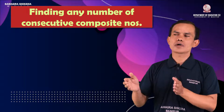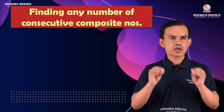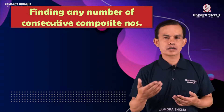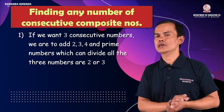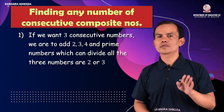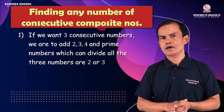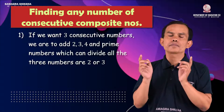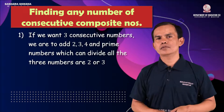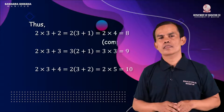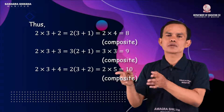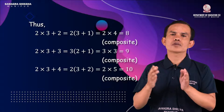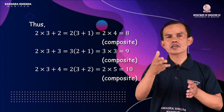Now, about consecutive composite numbers. Any product of consecutive integers like 2, 3, 4 gives composite numbers. If we take n consecutive numbers starting from 2×3×5 + 2, then 2×3×5 + 3, then 2×3×5 + 4, each term is divisible by 2, 3, or another factor respectively, making each composite.